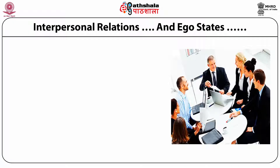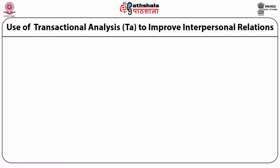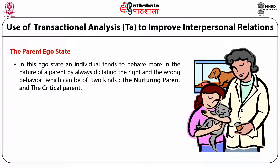It's very important to understand how these ego states determine our interpersonal relations. As Berne states, although we cannot directly observe these ego states, we can observe behavior and from this infer which of the three ego states is operating at that moment. In the parent ego state, an individual tends to behave more in the nature of a parent by always dictating the right and wrong behavior to the other person, which can be of two kinds: a nurturing parent ego or a critical parent ego.